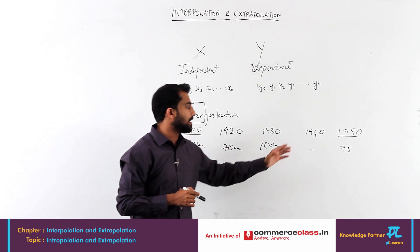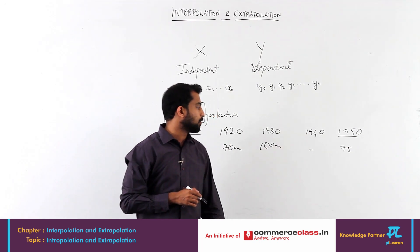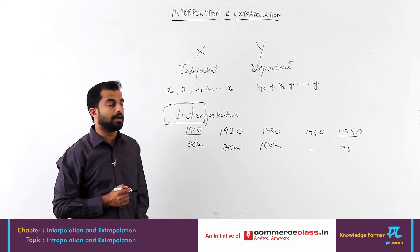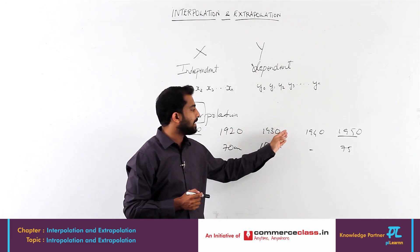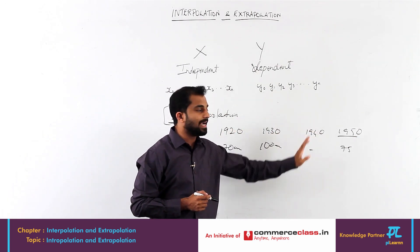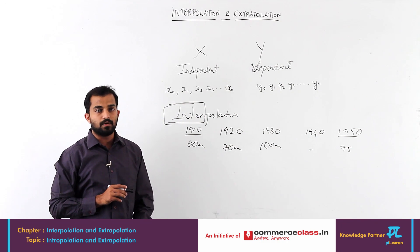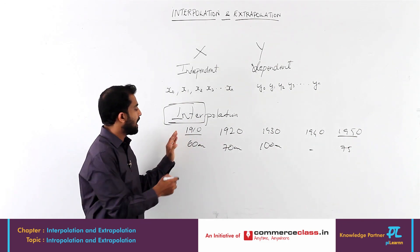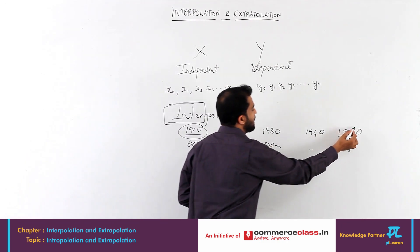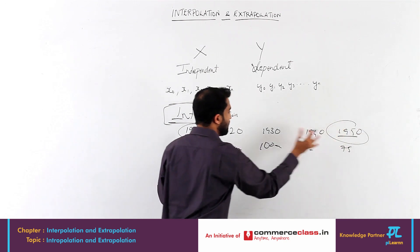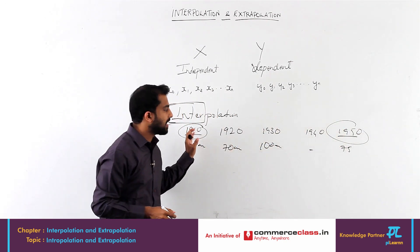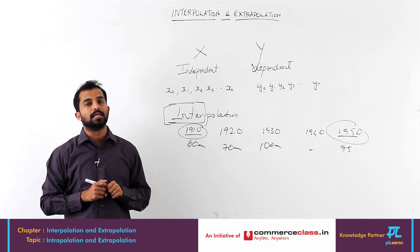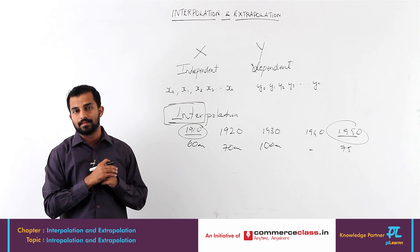If they give you: find the 1940 value, or find the 1925 value, find the 1948 value — all these values you can find. Why? Because all are within 1910 to 1950. Within this range, if they give you any value to find, it is called interpolation — inside the range.